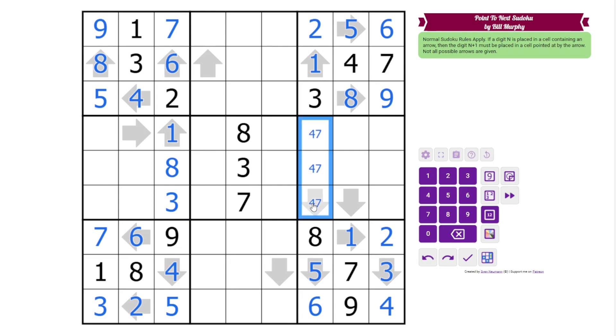Here we have 4, 7, 9. This can't be 7 because of the given digit. And 9 is never going to go in an arrow because we can't place 10 in these cells. So that's 4 pointing at this 5.